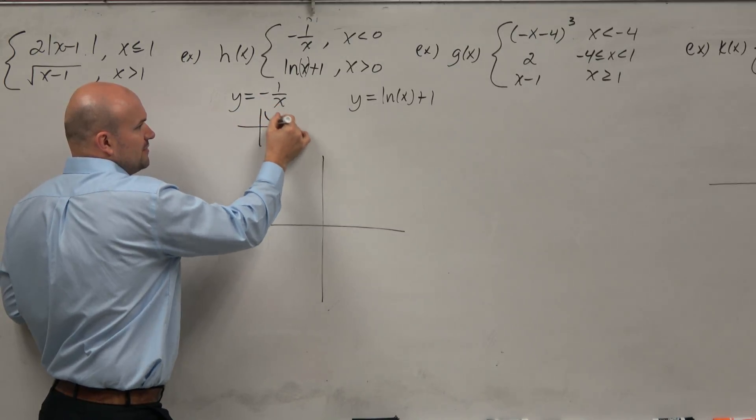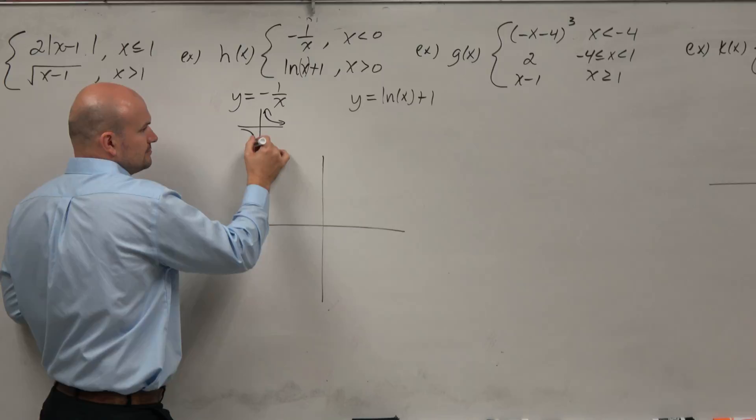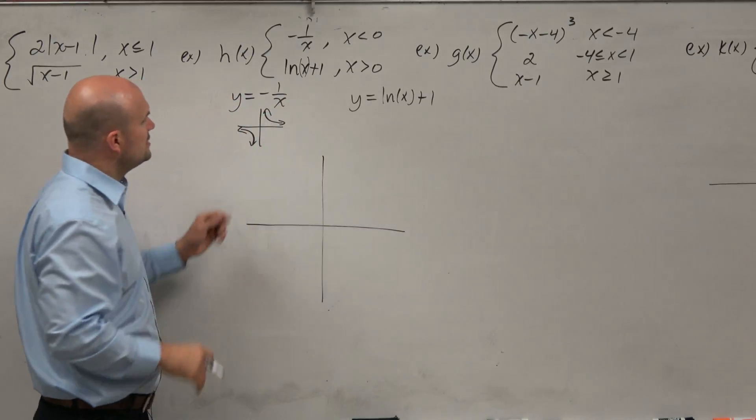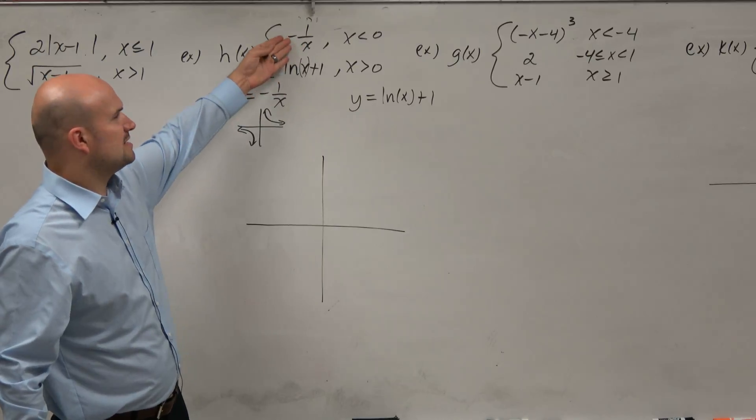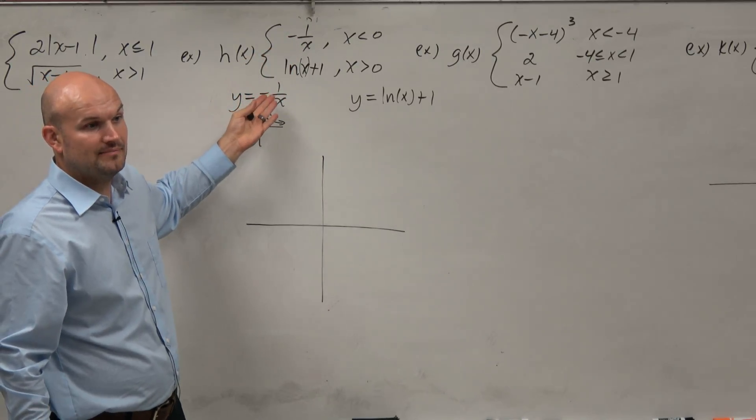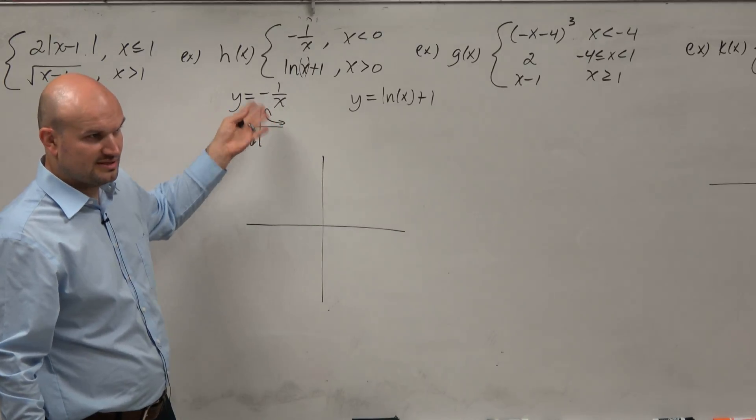So the parent graph of the reciprocal function looks like this. Now let's go and graph this. If I see the negative, the negative is up top, but it actually doesn't matter if you reflect this about the x-axis or y-axis, right? It's still going to be the same reflection.